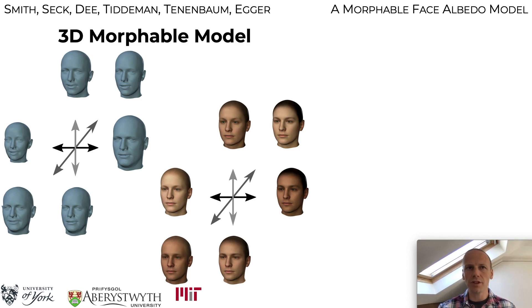3D morphable models are generative models that separate physical properties from an object class, specifically geometry and texture, from scene properties such as lighting and camera pose. Existing models use textures that are ill-defined, usually baking in shading, shadowing, specularities, light source color and so on.